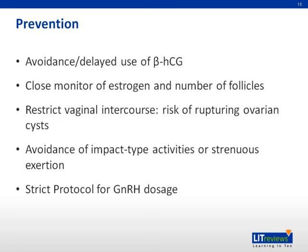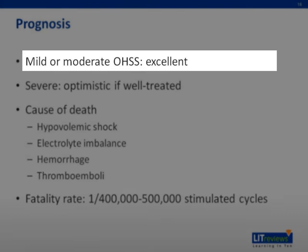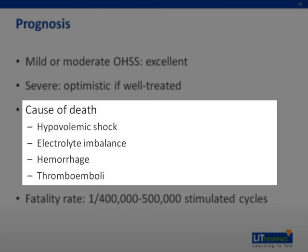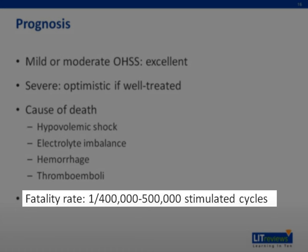Vaginal intercourse is restricted in women with any grade of OHSS because of the risk of rupturing a cyst. Patients should also avoid impact-type activities or strenuous exertion. The prognosis is excellent if OHSS is mild or moderate; in severe OHSS, the prognosis is optimistic if good treatment is given. Hypercoagulability may endanger the patient. Death from OHSS is largely due to hypovolemic shock, electrolyte imbalance, hemorrhage, and thromboemboli, with estimated fatality rates of 1 per 400,000 to 500,000 stimulated cycles.